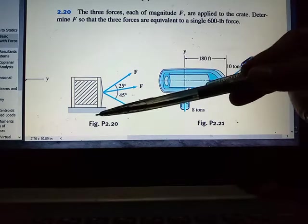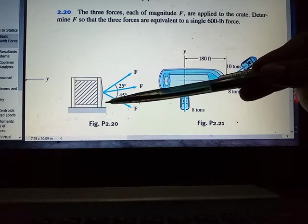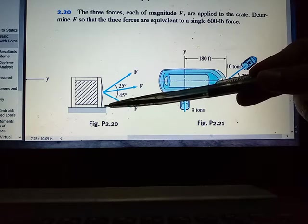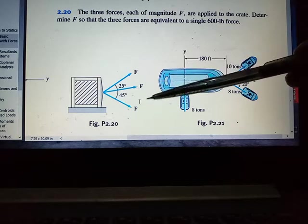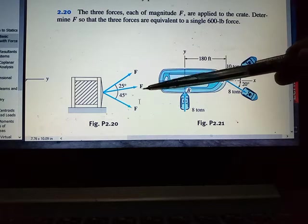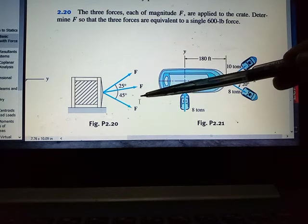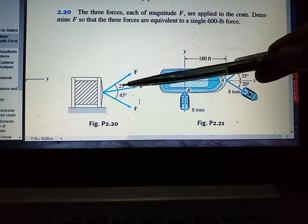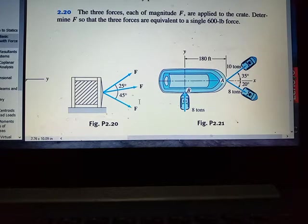This is the box, the crate, and then these are the three forces, each of magnitude F, separated by 25 degrees and 45 degrees. So without further ado, let's go to the solution.